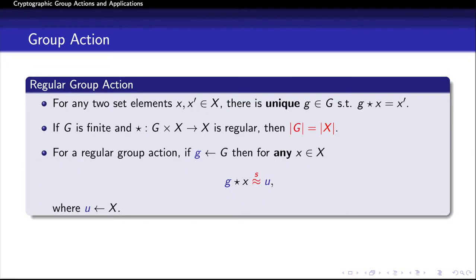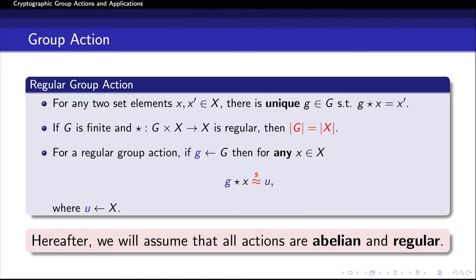Next, let me define a useful property for group actions, which is regularity. Given a group action where G acts on X, we say that the action is regular if for any two set elements x and x', there is a unique group element g that maps x to x'. Regularity implies desirable properties: if the action is regular and the group is finite, then the sizes of G and X are equal. In addition, for a regular group action, if we sample a uniformly chosen group element g, then the action of g on any x is uniformly distributed. Hereafter, unless stated otherwise, we assume that all group actions are abelian and regular.